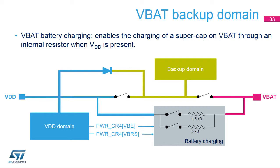VBE bitfield of the PWR-CR4 register enables battery charging. VBRS bitfield of the PWR-CR4 register selects the resistance value. During the startup phase, if VDD is established in less than T-R-ST tempo and VDD greater than VBAT plus 0.6 V, a current may be injected into VBAT through an internal diode connected between VDD and the power switch VBAT. If the power supply or battery connected to the VBAT pin cannot support this current injection, it is strongly recommended to connect an external low-drop diode between this power supply and the VBAT pin.